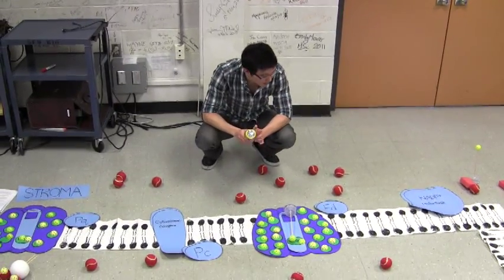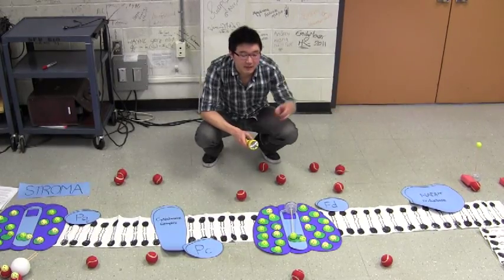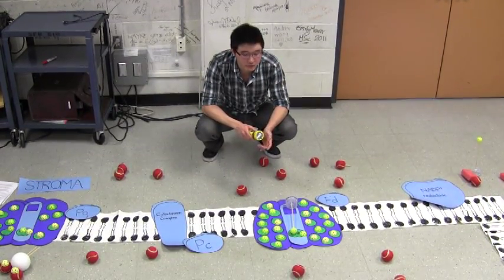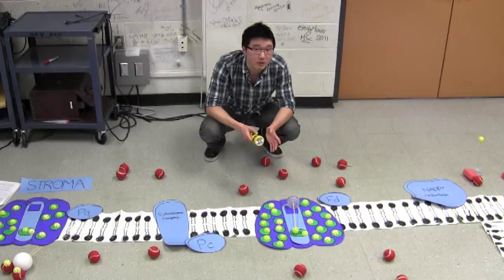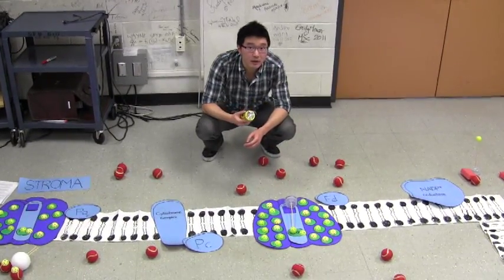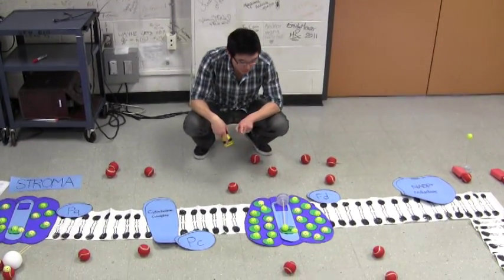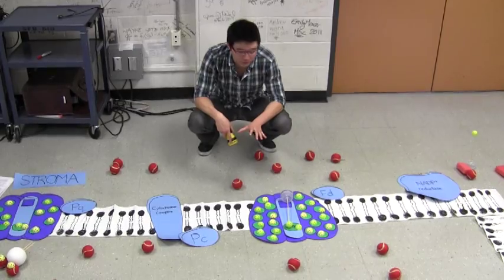Now, let's say that the cell, though, has enough NADPH, but it needs more ATP, whether it's for reactions right away or for making glucose. So if it only wants ATP and not NADPH, then we can do cyclic electron flow. So I'll walk you through this two times to see how this works.